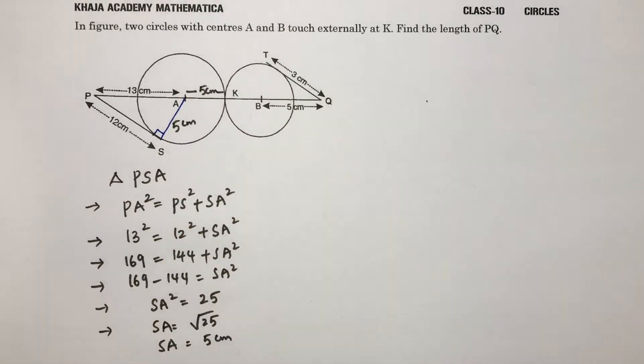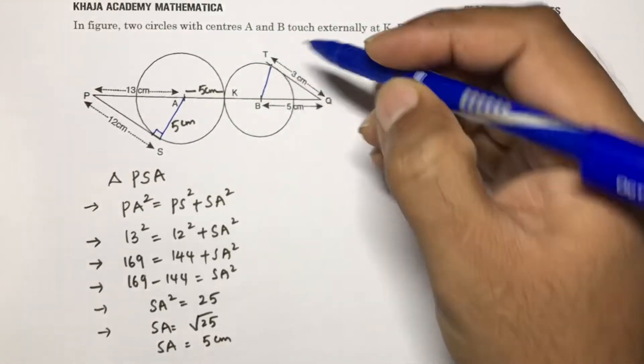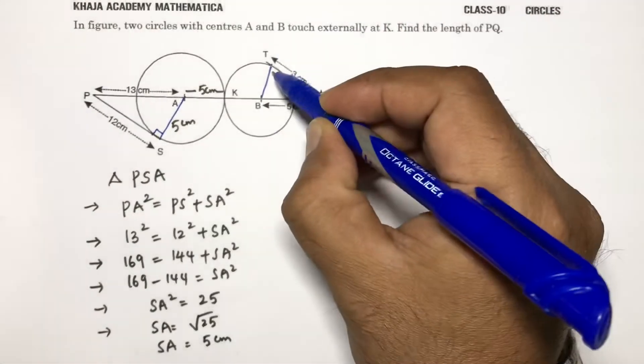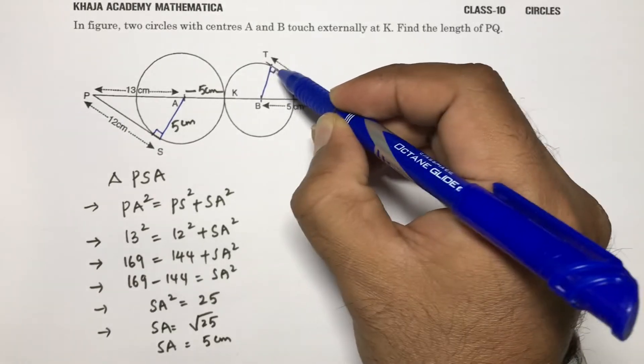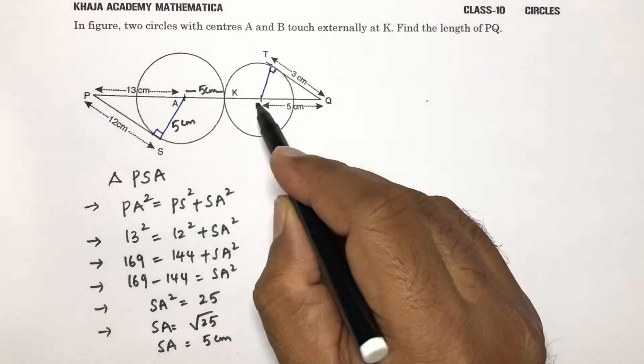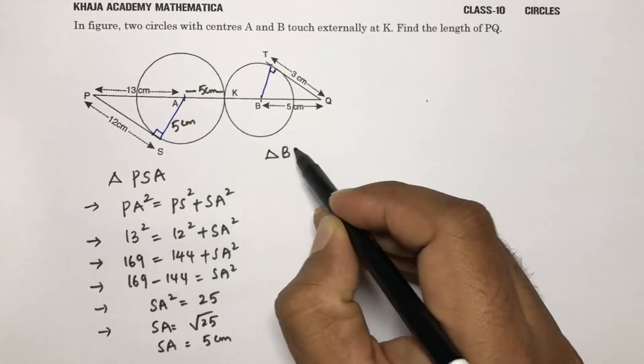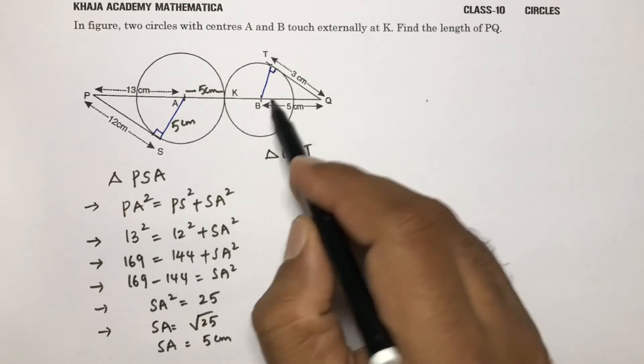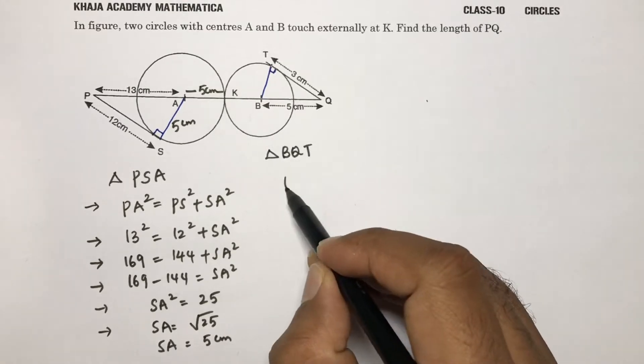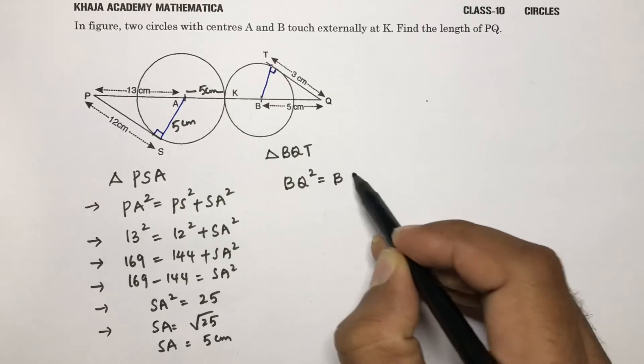Here the angle is 90 because the angle between radius and tangent is 90. Now take triangle BQT. BQ is the hypotenuse, so hypotenuse square equals sum of the squares of the other two sides.